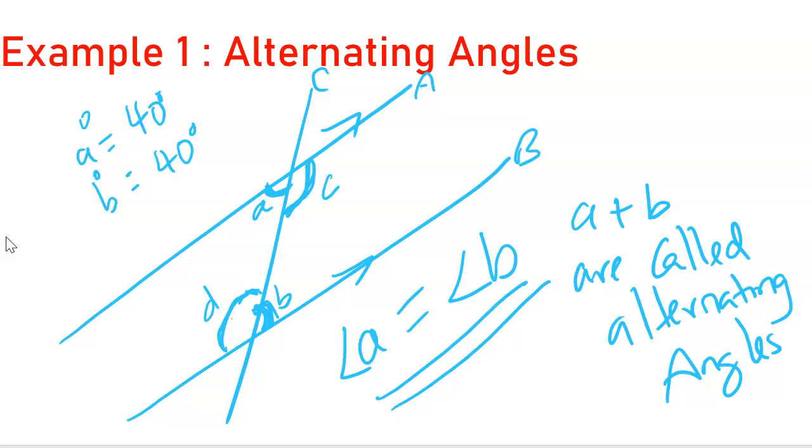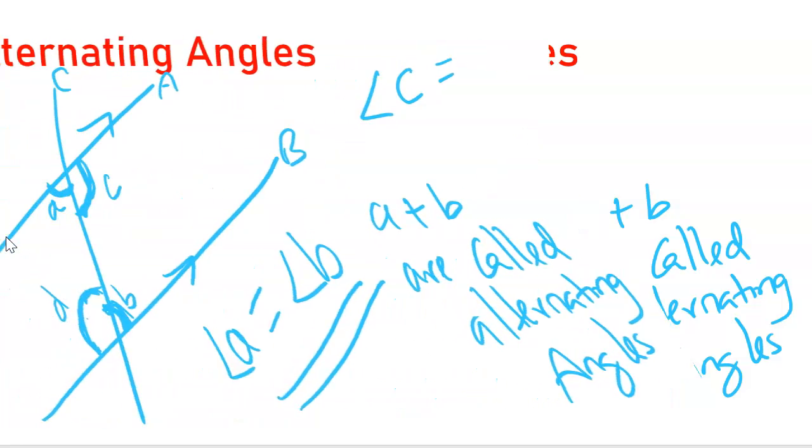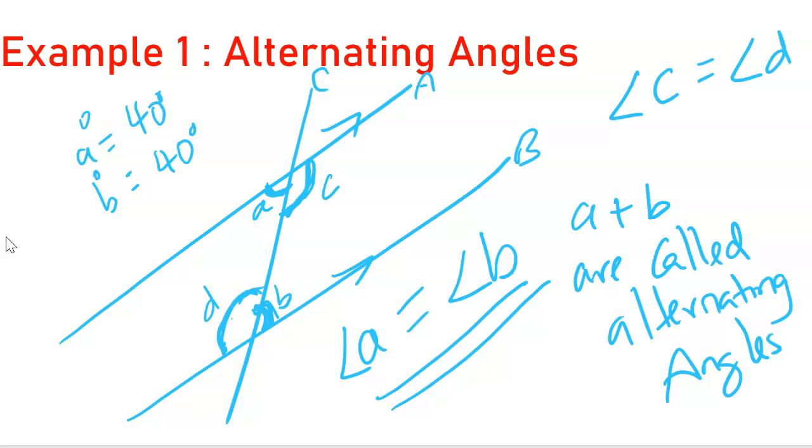So, angle C is also equal to angle D because of a similar property. They are also alternating angles.